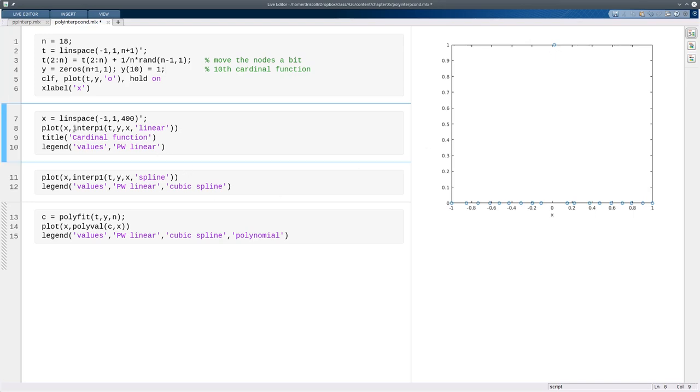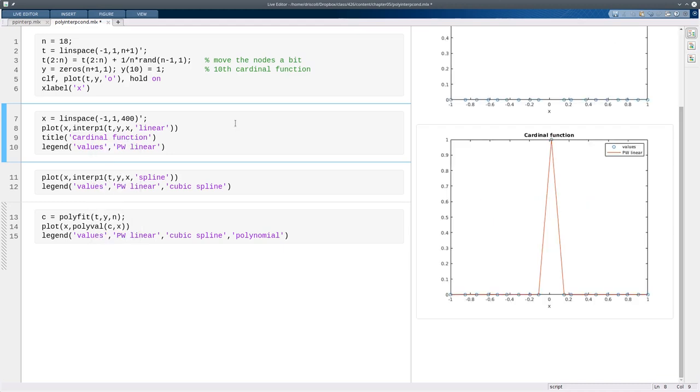Now I'm going to do the linear interpolant of that data using interp1, and we'll encounter this again in the next section. Sometimes this is called a tent function or a hat function, it's very simple, and as you can see, and reason would tell you, the values are always going to be between 0 and 1, which means that our condition number bound from the theorem is going to be pretty small.